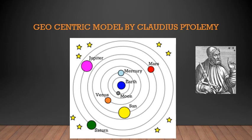In ancient times, people thought that the sun, the moon and the planets were orbiting the earth. This was known as the geocentric model, expounded by Claudius Ptolemy. As you can see in the picture, in this model the earth is in the middle, with Mercury, Moon, Venus and the Sun around it. This was believed many, many years ago, but it was later disproved.